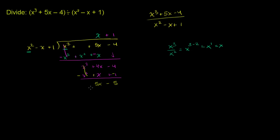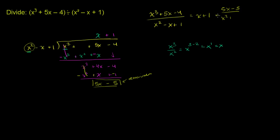You might be tempted to keep dividing, but you can't anymore. The highest degree term here is now higher than the highest degree term you're trying to divide into, so we have a remainder. So the answer to this expression is x plus 1 — this x plus 1 plus the remainder, plus 5x minus 5, divided by x squared minus x plus 1. It's now a lower degree than the divisor, so our answer is x plus 1 plus 5x minus 5 over x squared minus x plus 1.